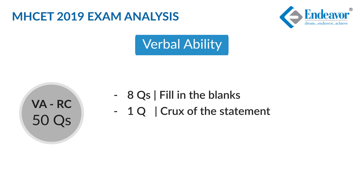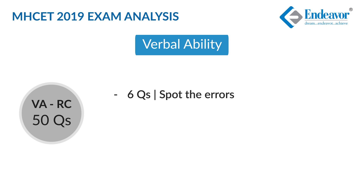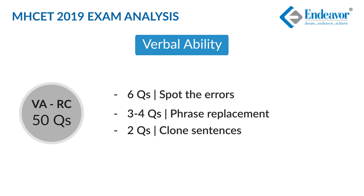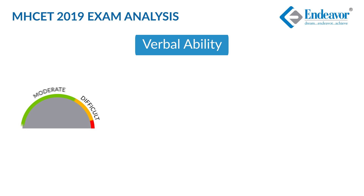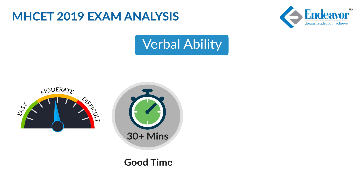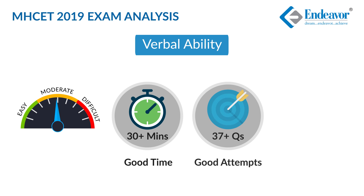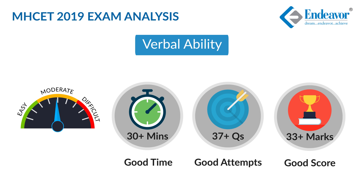There were questions on finding the crux of the statement. Idiom usages had around 5 questions, with grammar given substantial importance — spotting the error for around 6 questions. Underlined word replacements had around 3 to 4 questions and identifying the correct sentence from 5 that looked similar. Clone sentence types had around 2 questions. The 5-question caselet on para jumbles was a little tricky because the 3rd statement was given fixed and you had to rearrange the other statements around it. The ideal time for this section is around 30 to 32 minutes, with ideal attempts of 37+ and an ideal score of 33+.